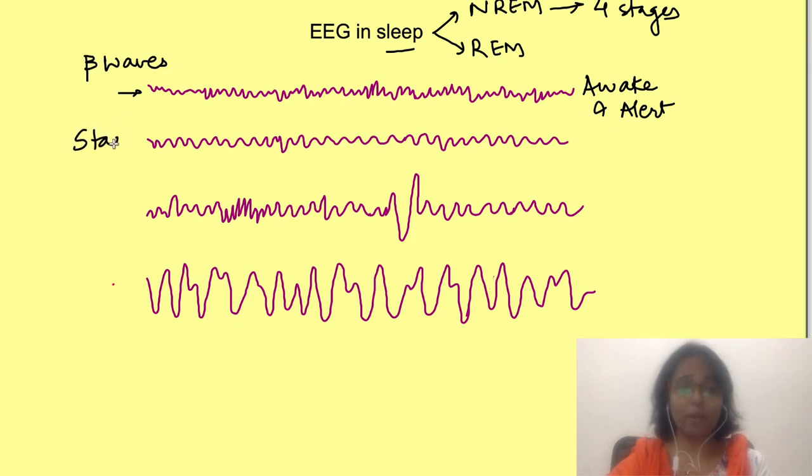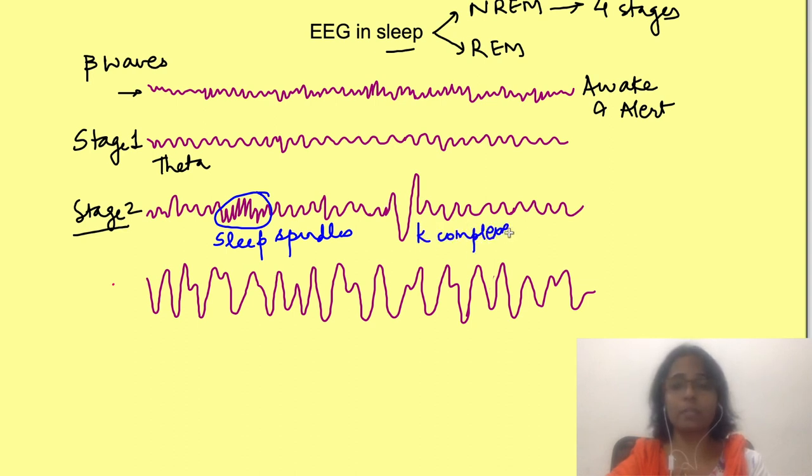In stage 1 of sleep, the lighter sleep, we see theta waves. In stage 2 we see similar waves but there is also appearance of sinusoidal waves known as sleep spindles. These waves are sinusoidal, so these are sleep spindles. There is also appearance of occasional high-voltage biphasic waves known as K complexes.